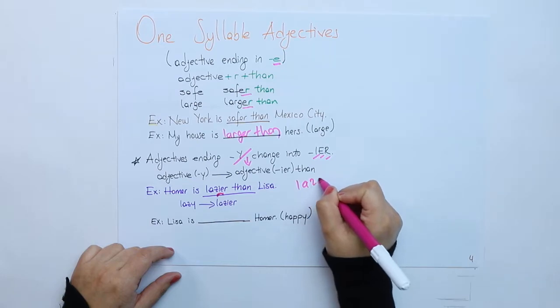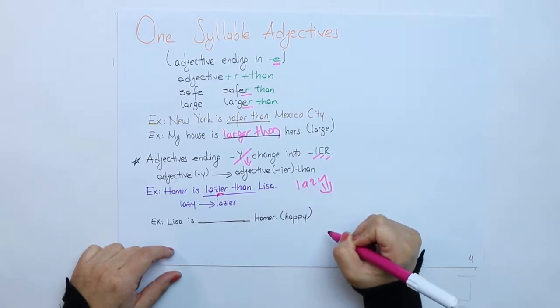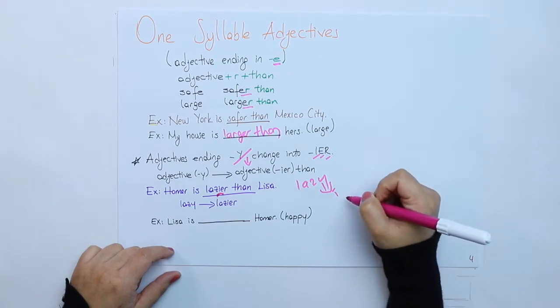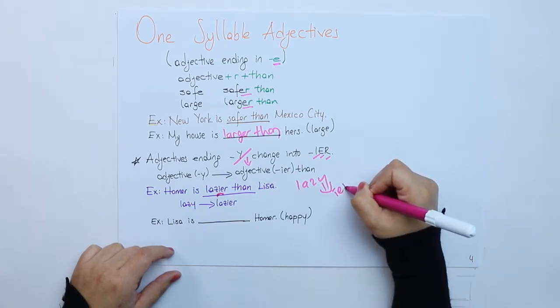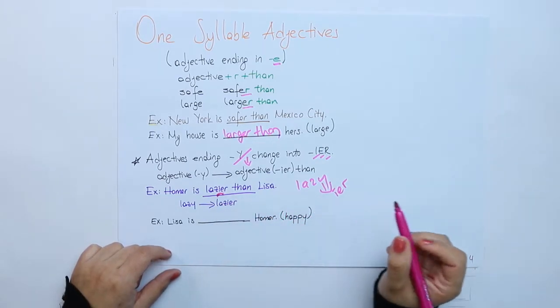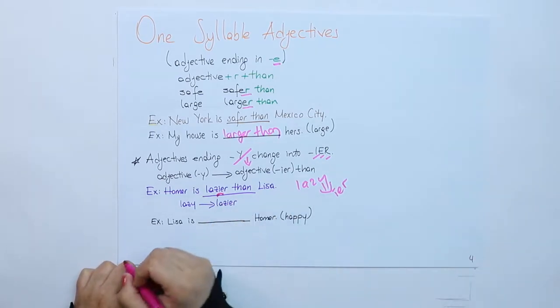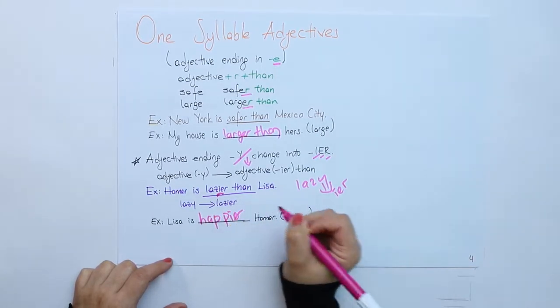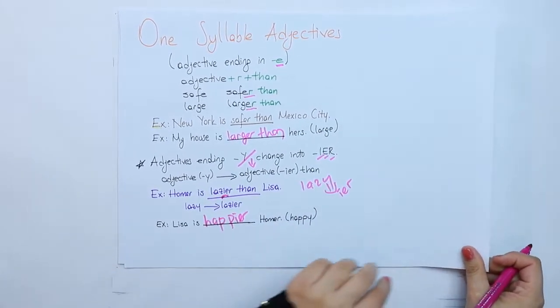Homer is lazier. You know it's lazy, but Y drops and turns out to I, then gets ER. Lazier than Lisa. Lisa is happier than Homer.